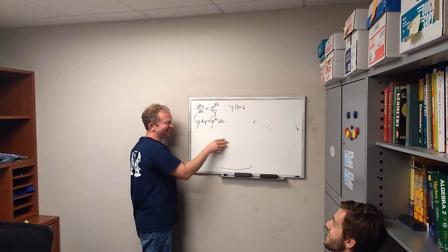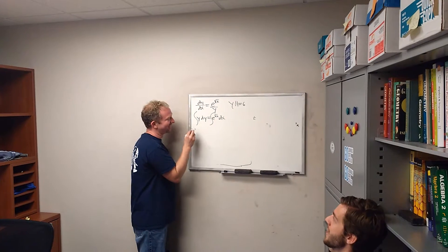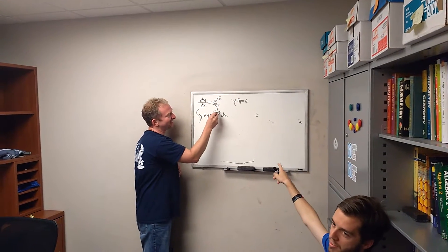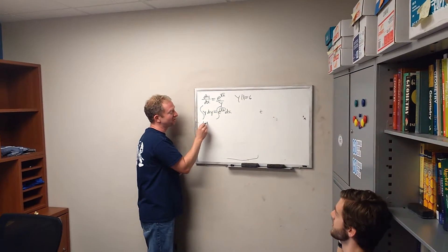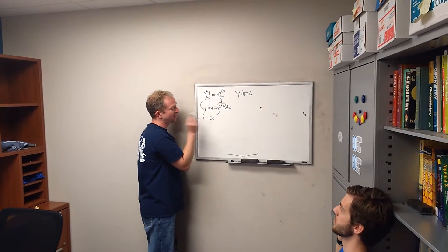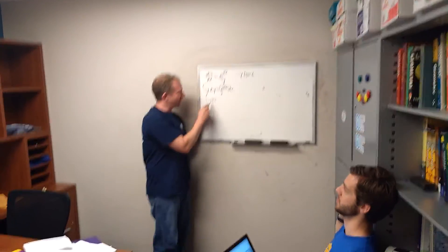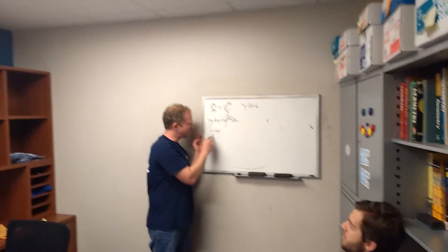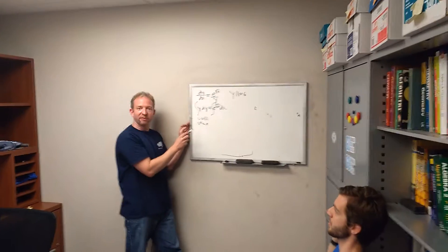The Y side was fine. The other side — that's actually a U-sub. Yeah, it's actually a U-sub. It's a really tricky U-sub, though. U, U-squared, and X. U-squared is X.